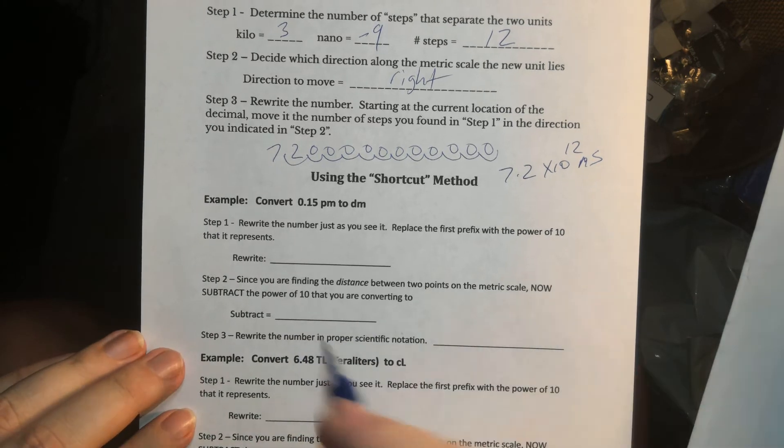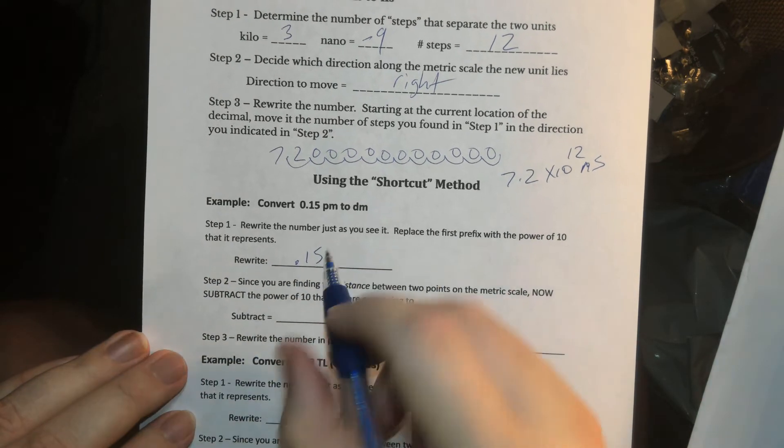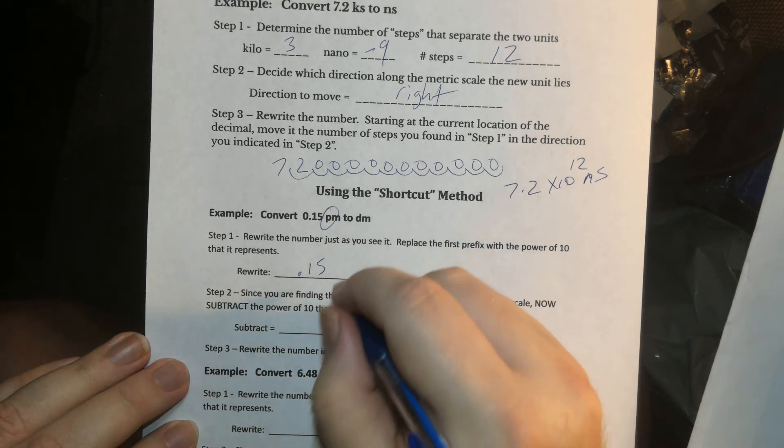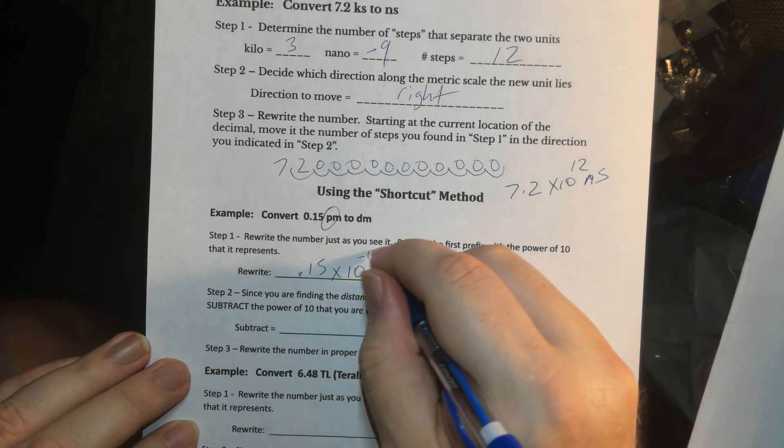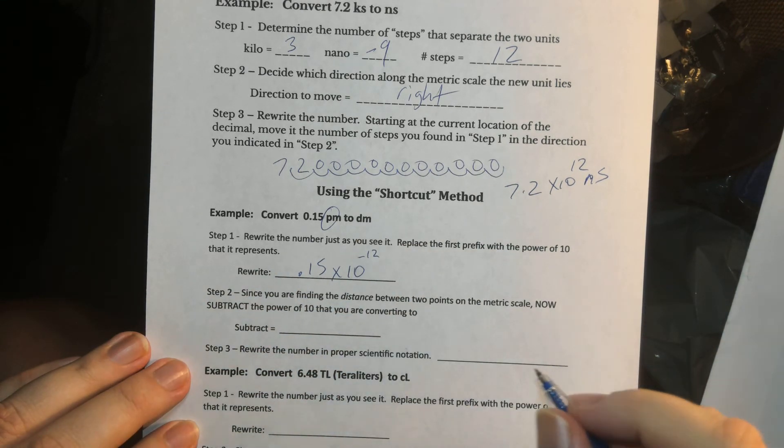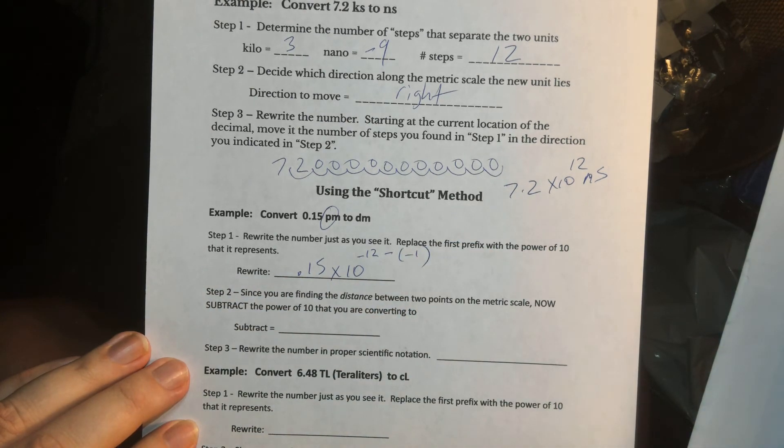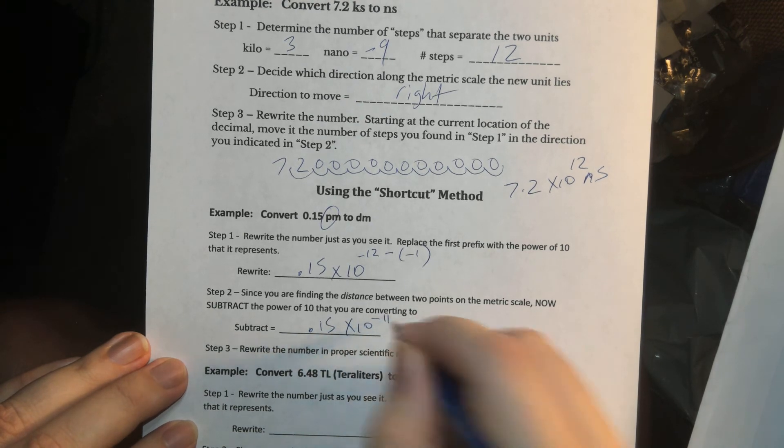So all we do in the shortcut method is we just write the number as we see it, 0.15. And I'm going to replace the first prefix that I want to change. In this case, it's pico with a power of 10 that represents. So look at your number line. Pico represents minus 12. And then we're going to go to desi. So we're just going to subtract that minus 1.